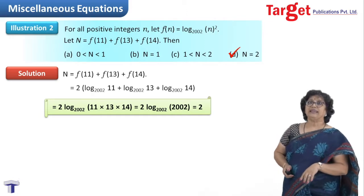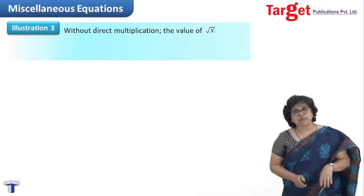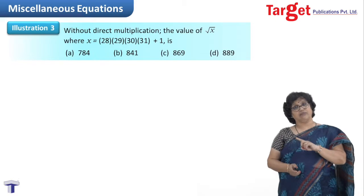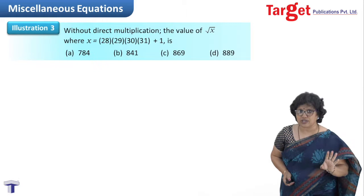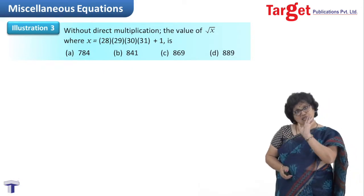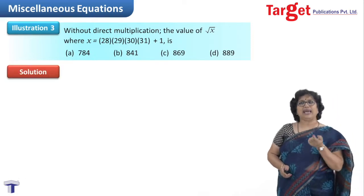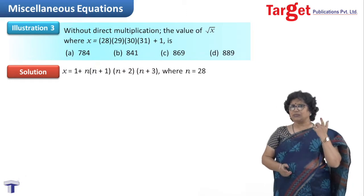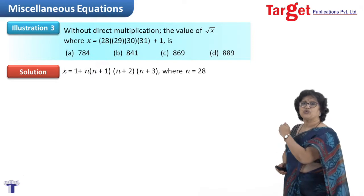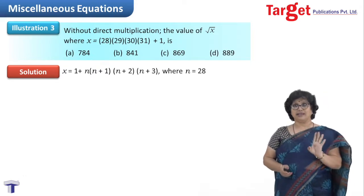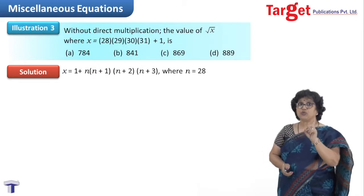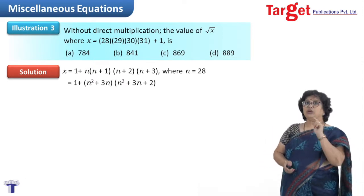The next question is: without direct multiplication, find the value of √x where x = 28×29×30×31 + 1. The hint is clearly written that without multiplication means there has to be some hint hidden in the problem. When I read 28, 29, 30, 31, these are 4 consecutive numbers. Why not name them as n, n+1, n+2, n+3? This algebraically looks more decent. I write x = 1 + n(n+1)(n+2)(n+3), and keep in mind that n is to be replaced by 28.